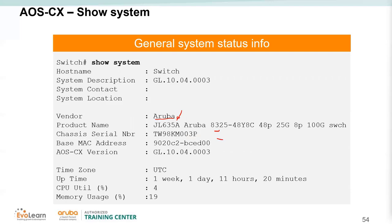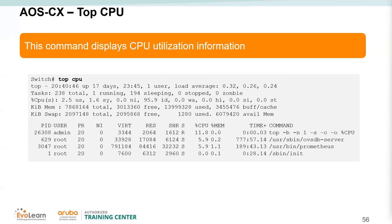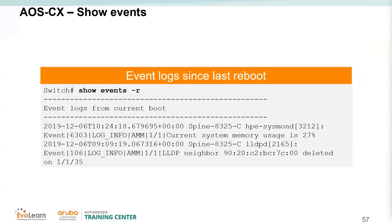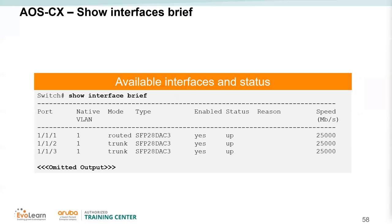'Show running-config' displays the current configuration. 'Top cpu' and 'top memory' are Linux-style commands showing CPU and memory usage by process. 'Show events' — with the '-r' flag for reverse order — displays logs. Logs can also be sent to an external syslog server. 'Show interface brief' lists every interface regardless of type: layer 2, layer 3, SVIs, loopbacks, and all physical ports.